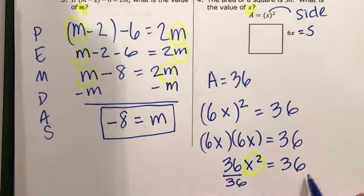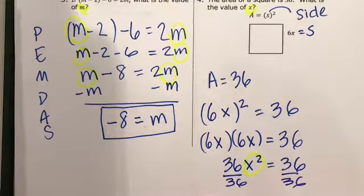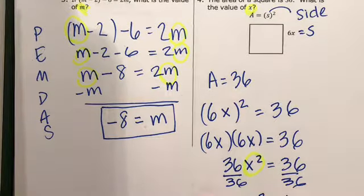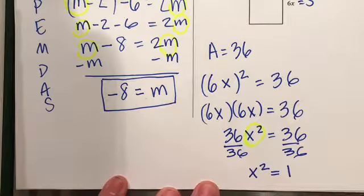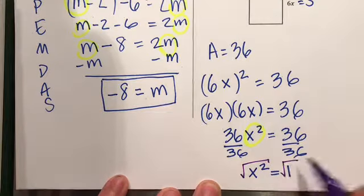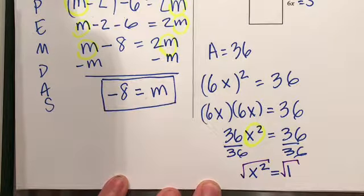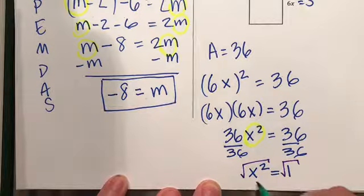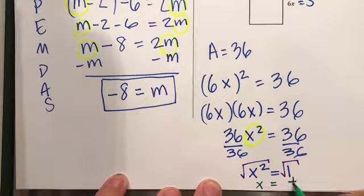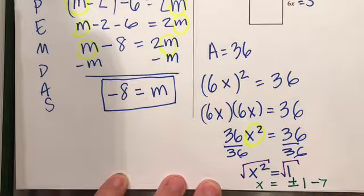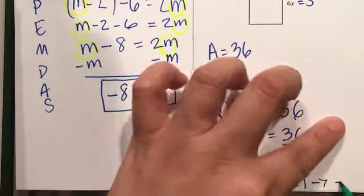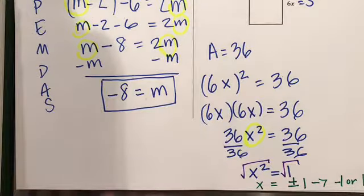Divide both sides by 36. x squared equals 1. Sorry, I know you can't see that. So x squared equals 1. Then I want to take the square root of both sides to get x. So x equals a positive or negative 1, which means negative 1 or 1 is the value of x.